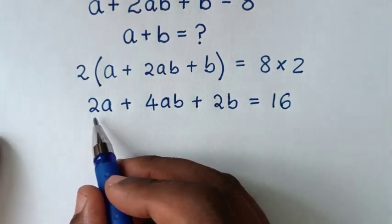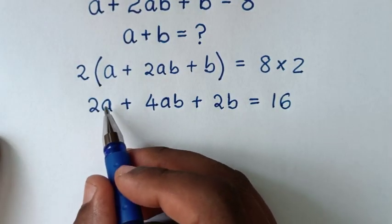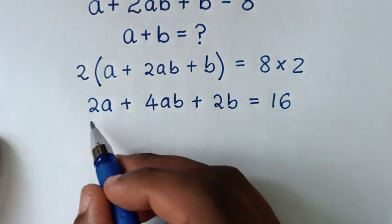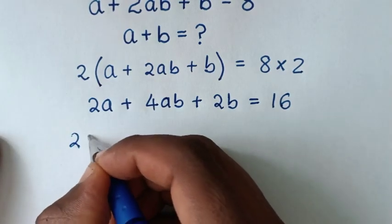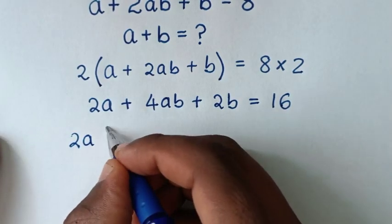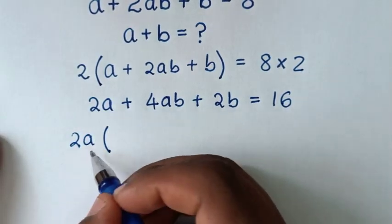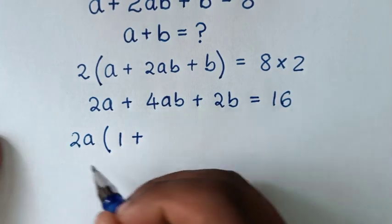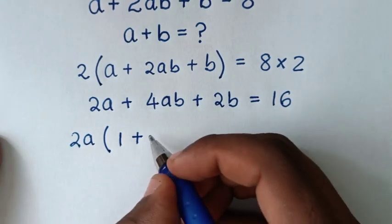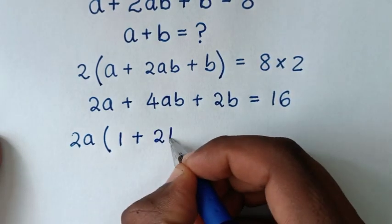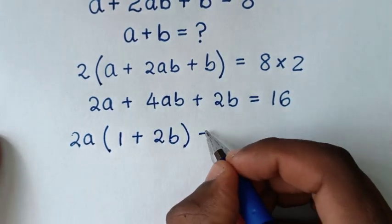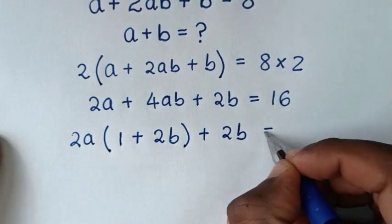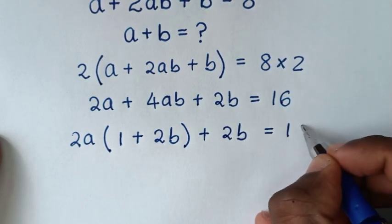In the next step, from 2a and 4ab, 2a is common. So we take 2a out of the bracket: 2a divided by 2a is 1, plus 4ab divided by 2a is 2b, then plus 2b is equal to 16.